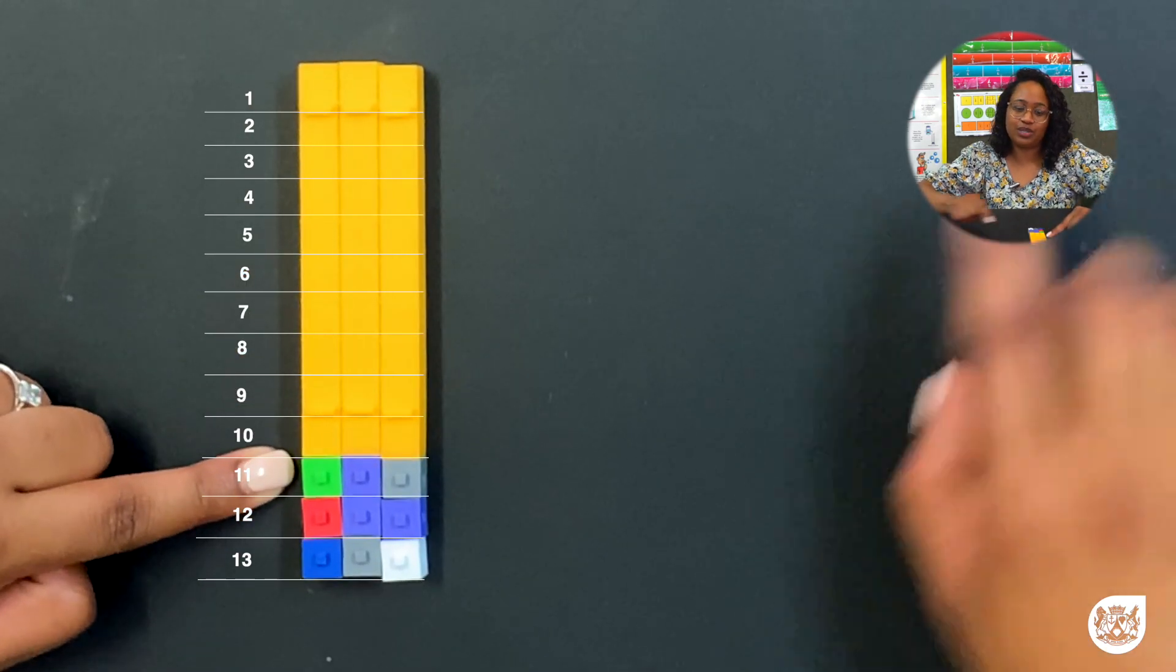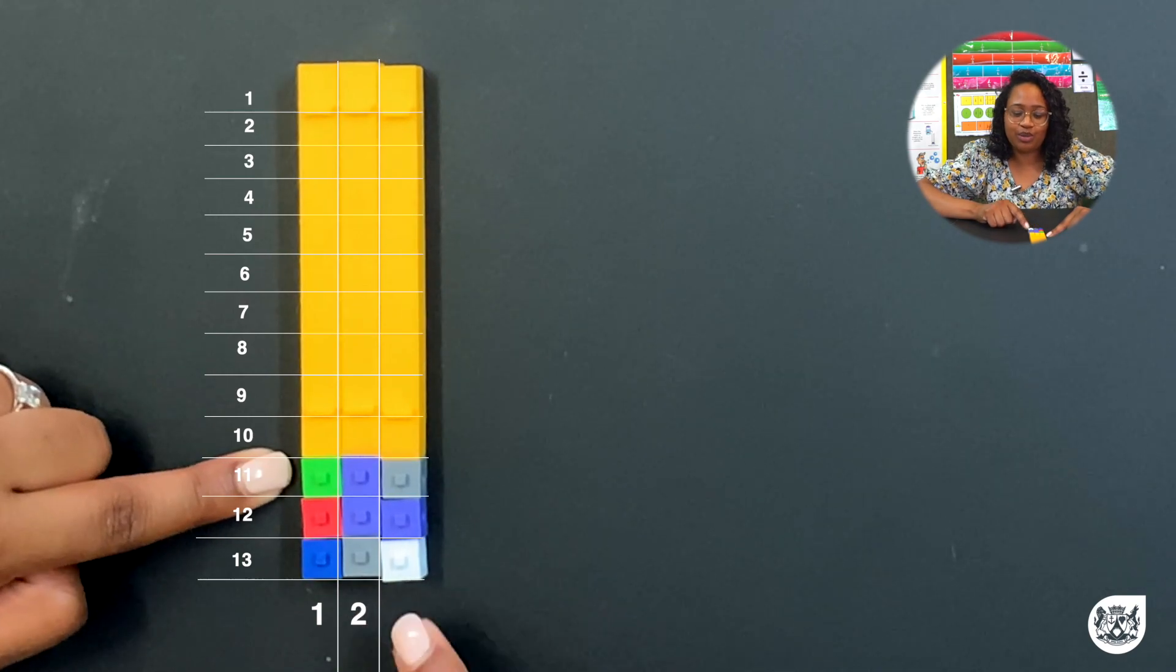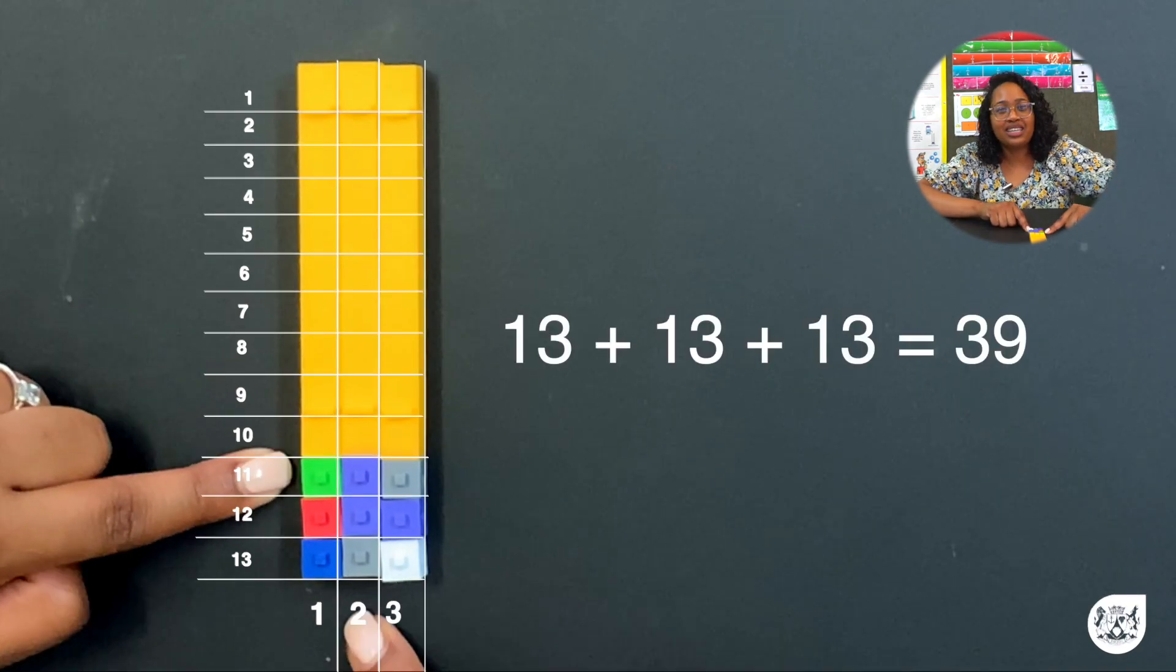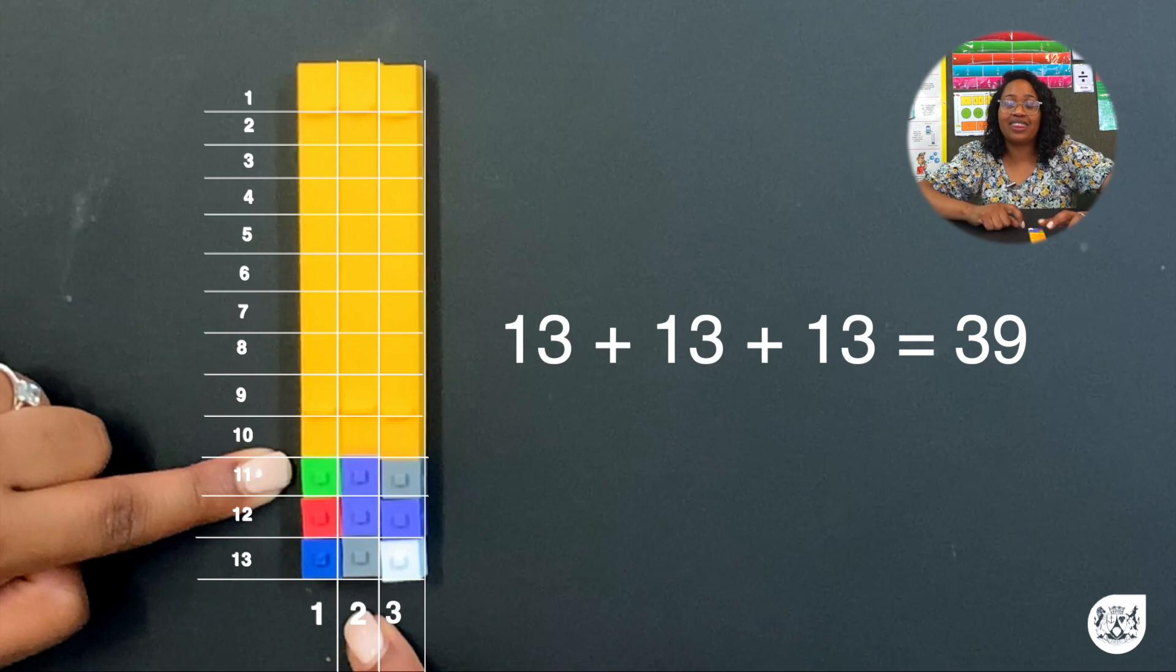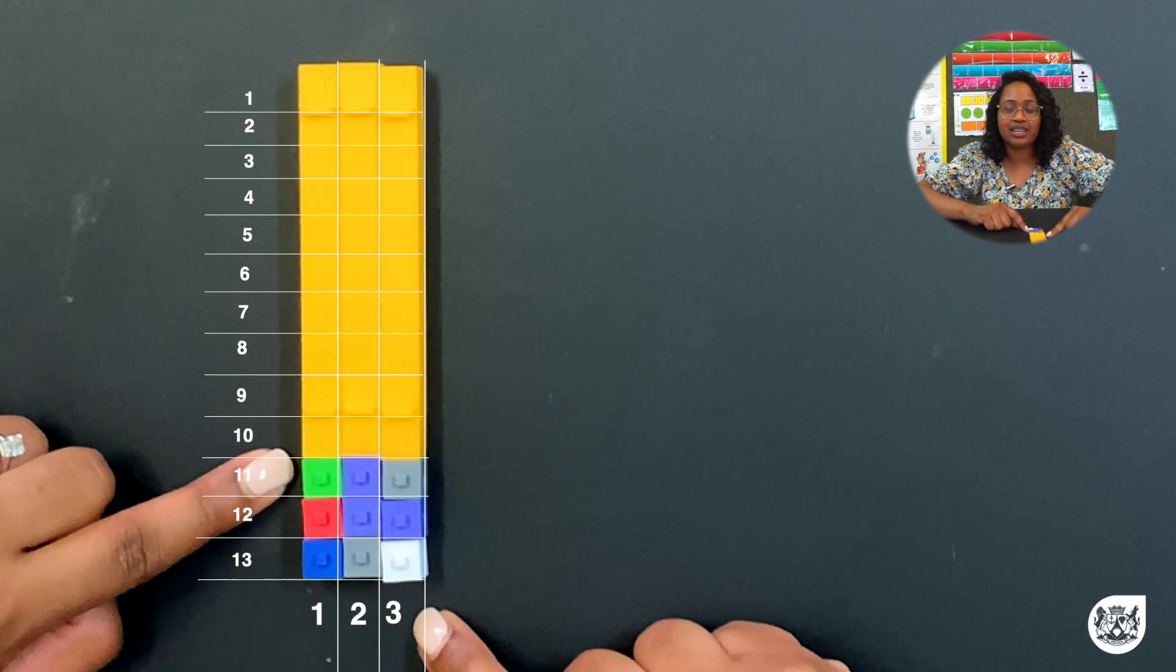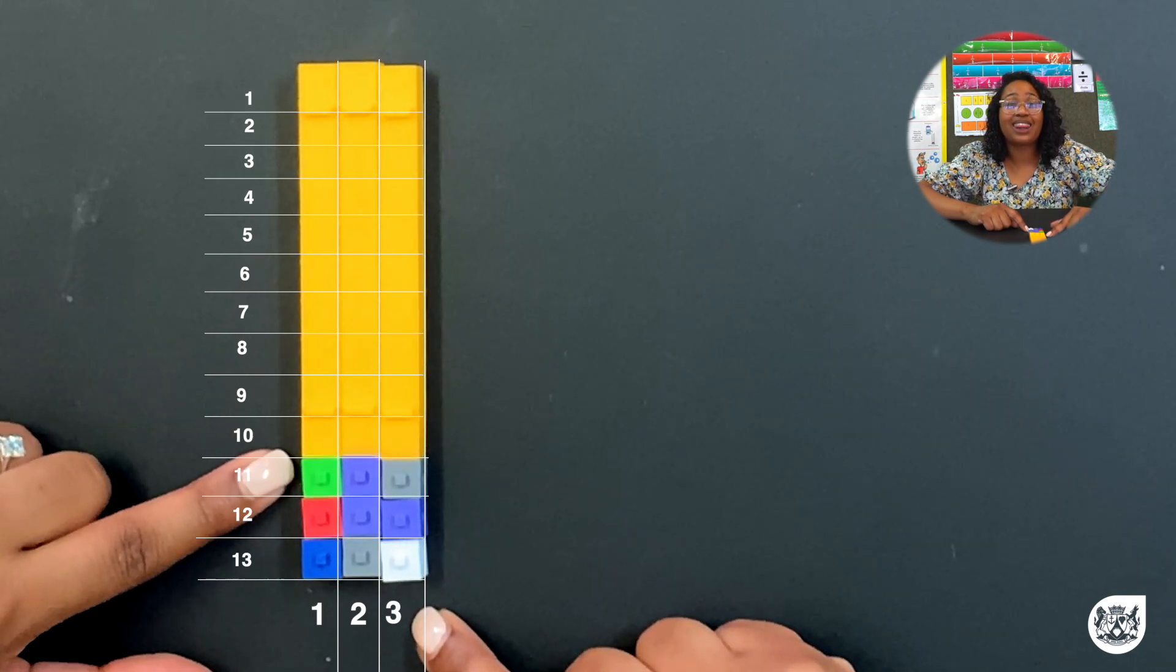And we've got 3 columns. 1, 2, 3. So 13 plus 13 plus 13 gives us 39. Or 13 times 3 gives us a product of 39.